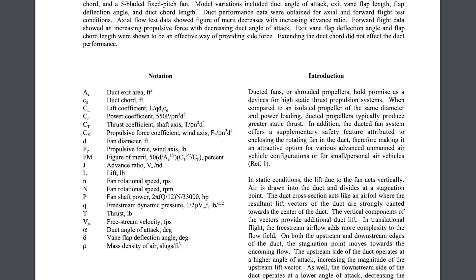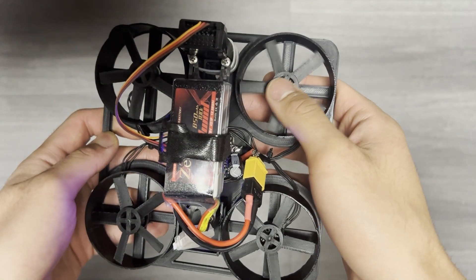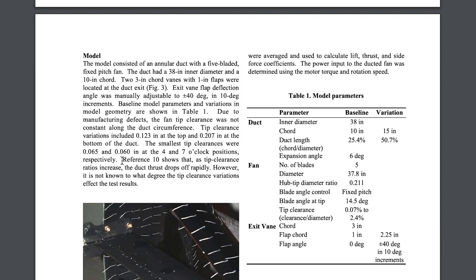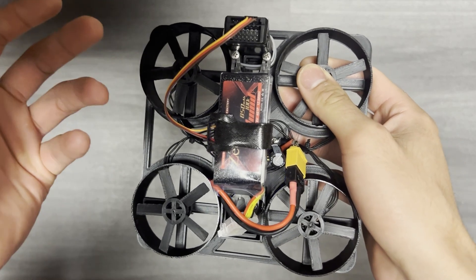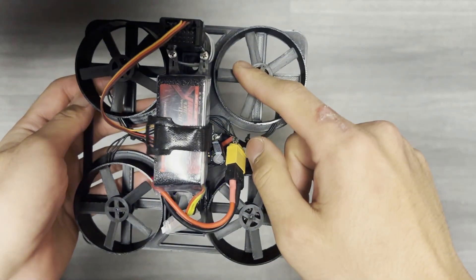There is this NASA study of ducted fans, and here's just a quick quote from the intro. It says that as the tip clearance ratio is increased, the duct thrust drops off dramatically. And so although there isn't an analytical solution for this relationship yet, it's enough for me to be concerned, a lot more concerned than I was about tip clearance right here.